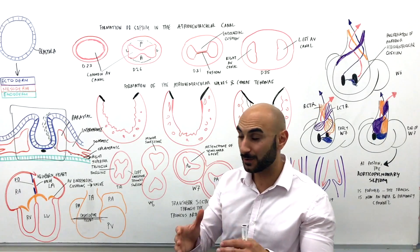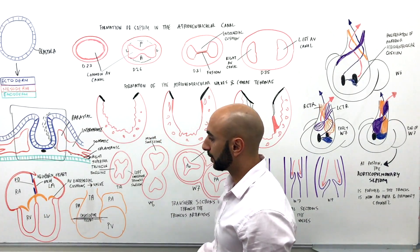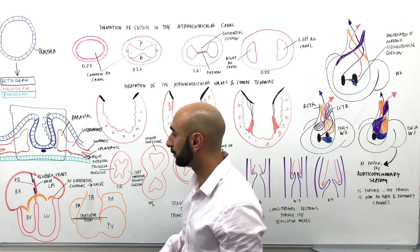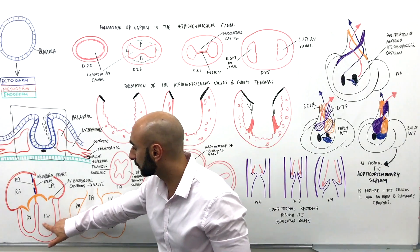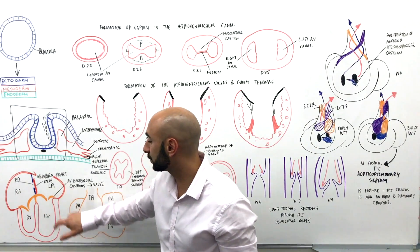And we went through all of that in the previous video. This is just a very quick recap because now we're going to fast forward to the newborn heart. So this is what it looks like at a longitudinal section of the newborn heart. We have the left ventricle, right ventricle, the septa, right atrium, left atrium.